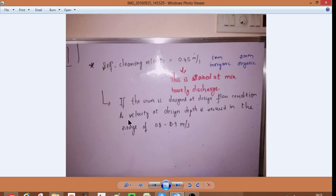If the sewer is designed at design flow condition and velocity of design depth is ensured in the range of 0.8 to 0.9 meter per second,